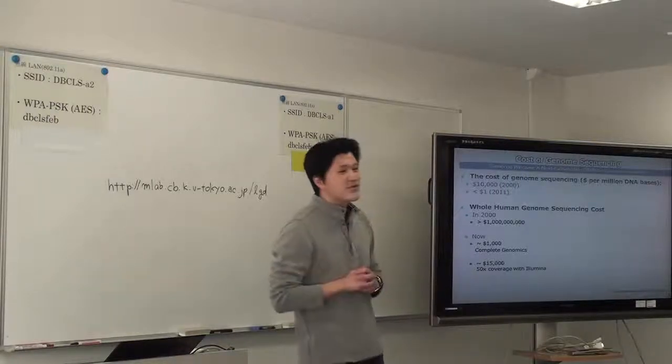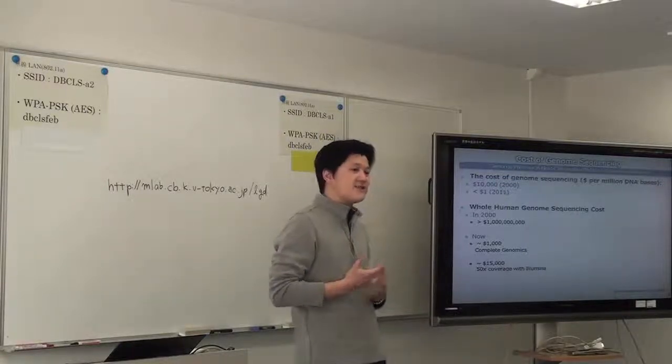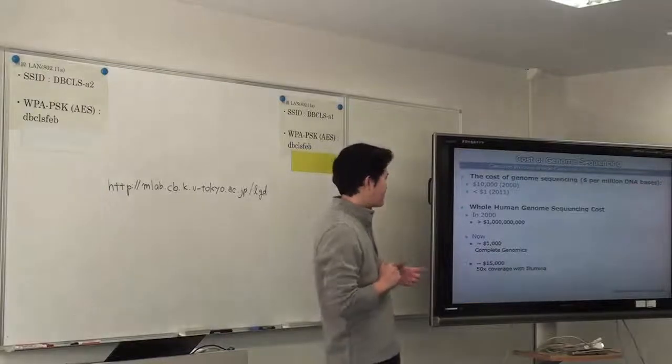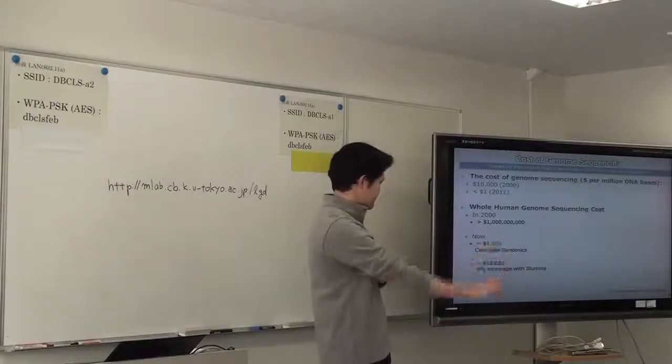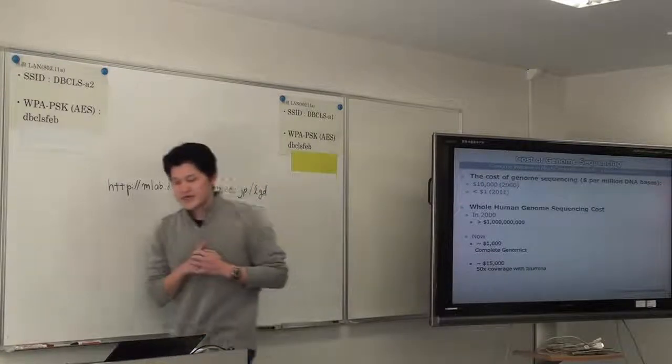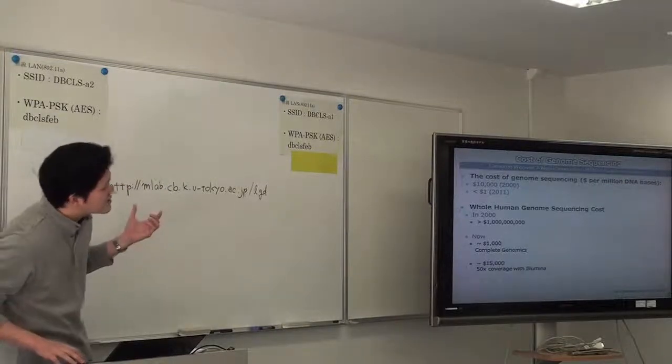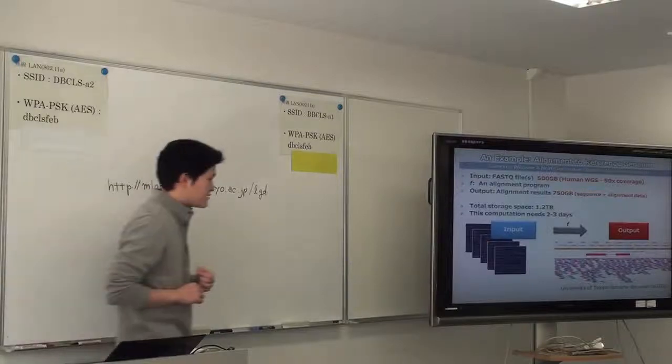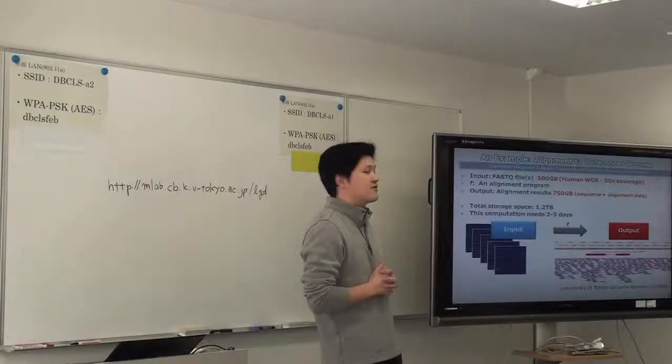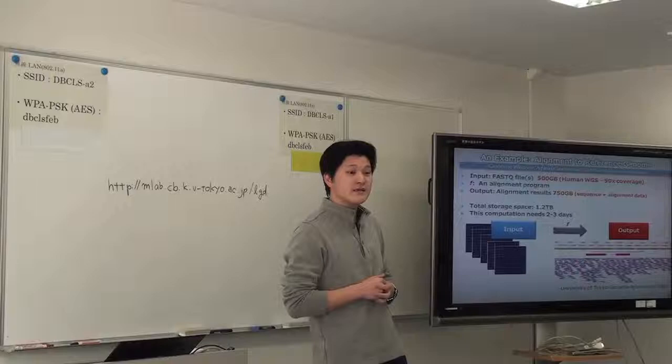Now, in reality, if we use Illumina genome sequencer, probably we need 50x, 50-fold coverage to detect SNPs of homozygous or heterozygous SNPs. To detect them, 50x coverage is necessary. And this cost will be $15,000. So the target input has this amount. So now the FASTQ files have 50x coverage for genome sequencing. And from my experience, its amount is 500GB of text data.